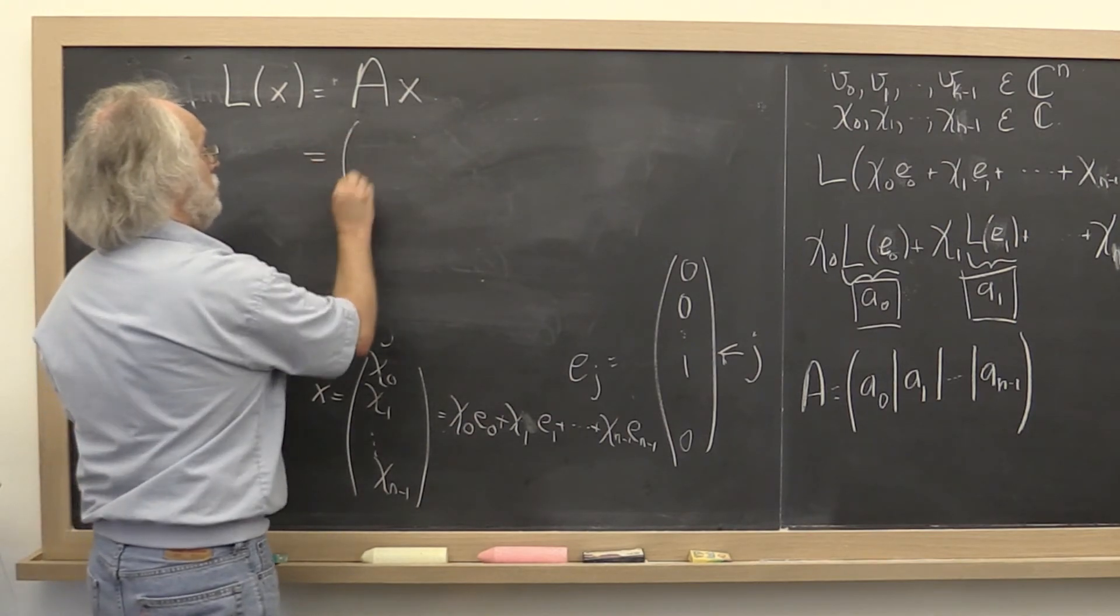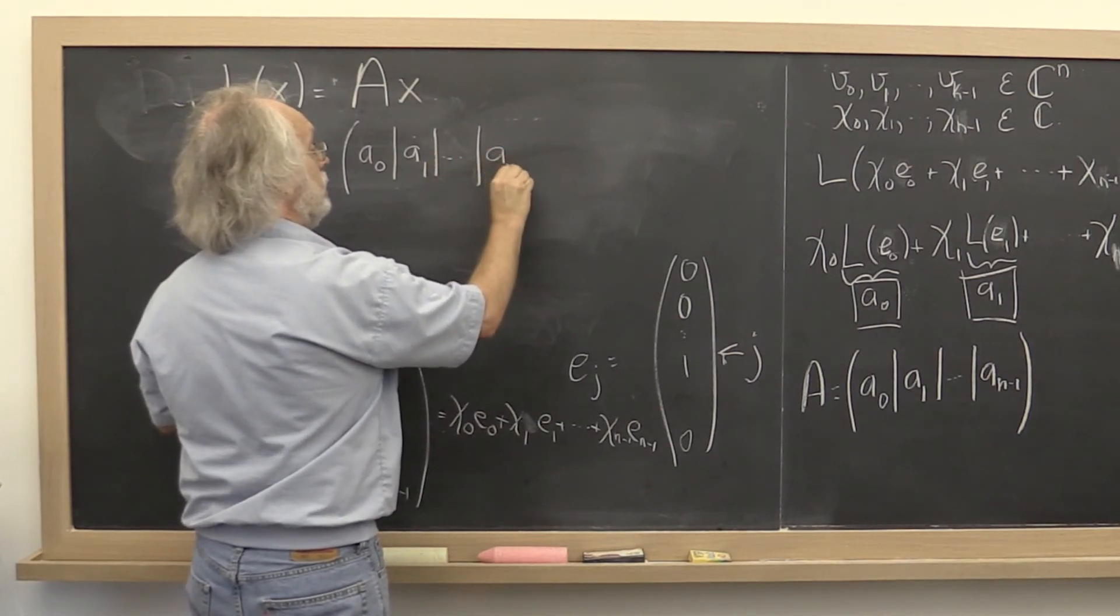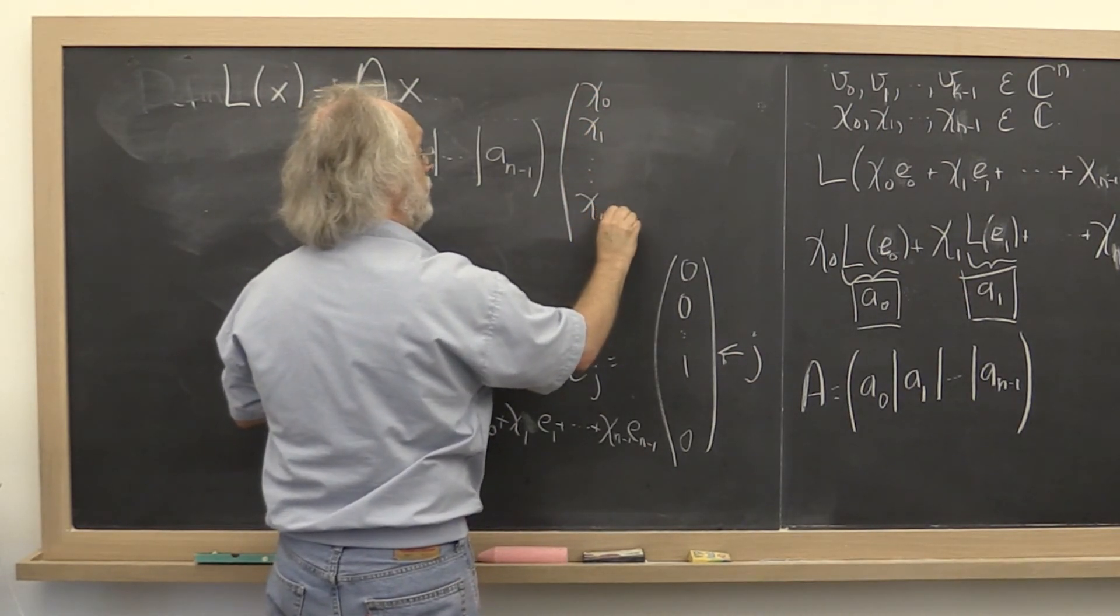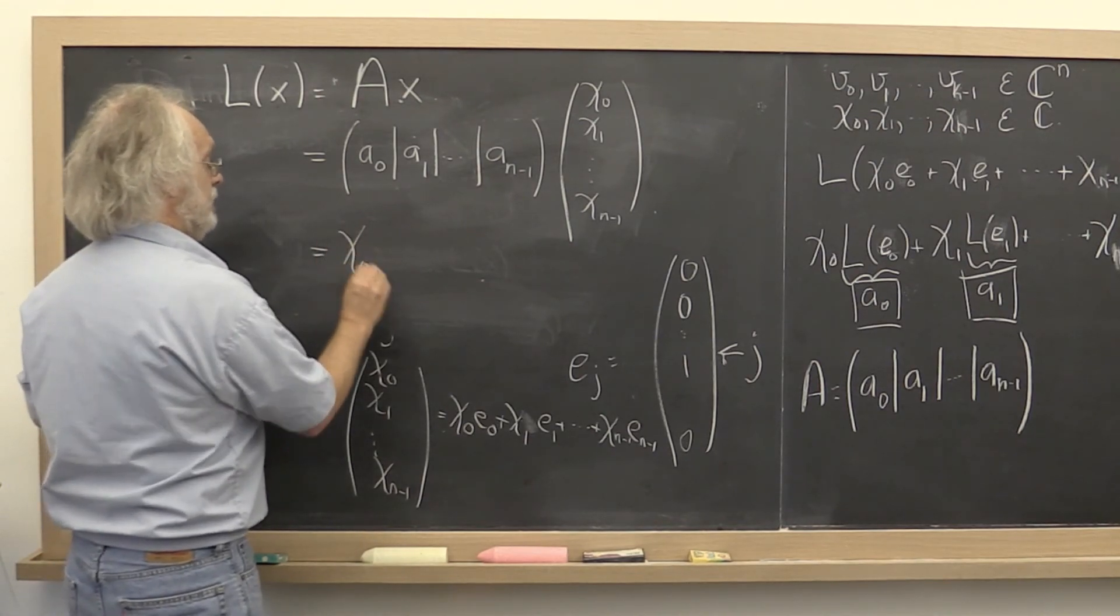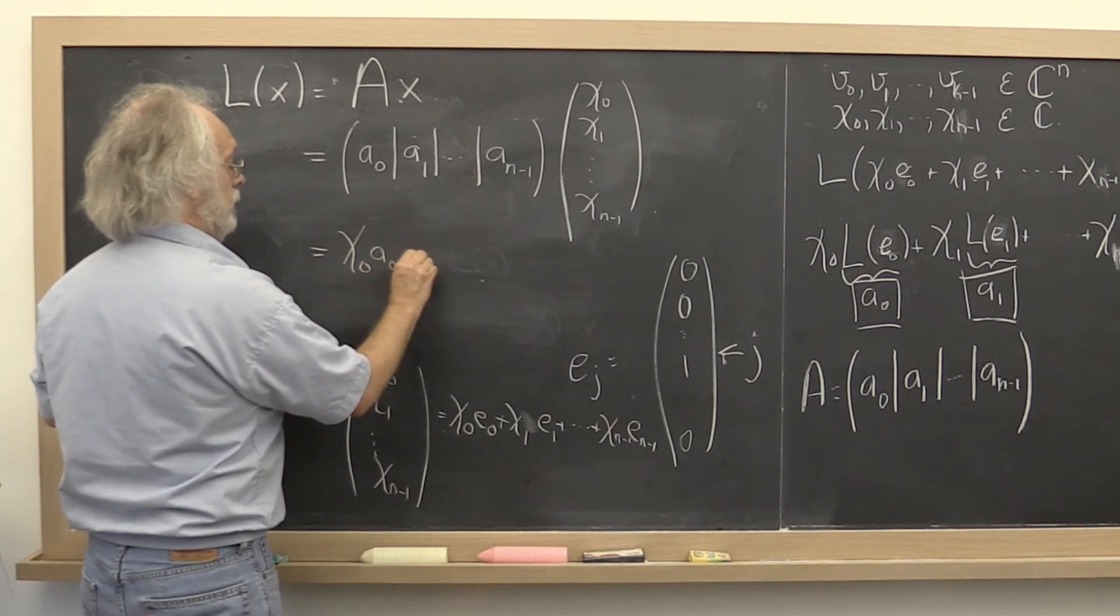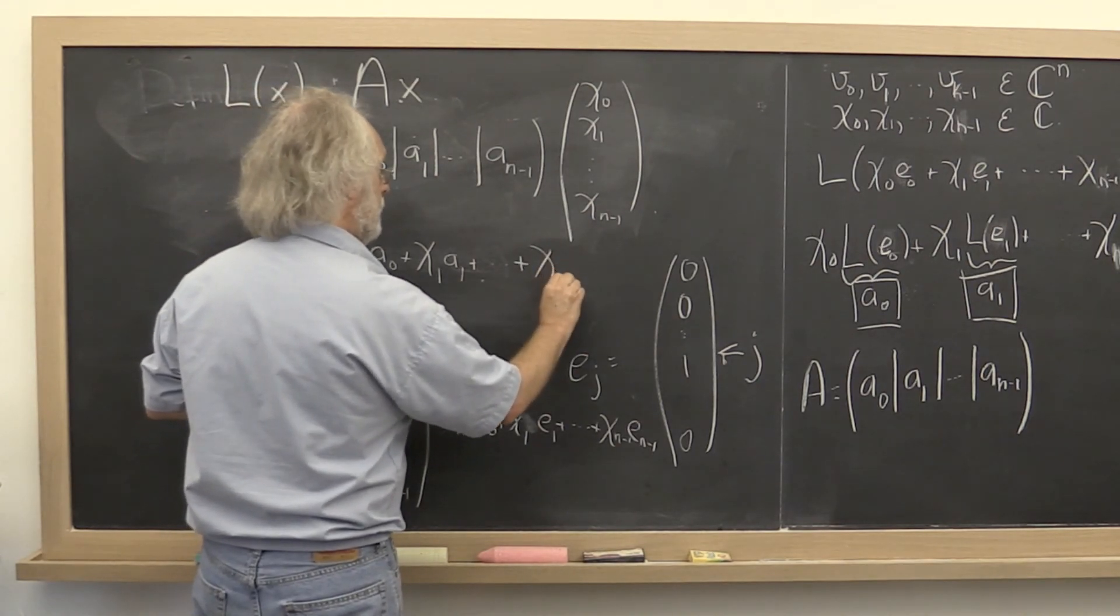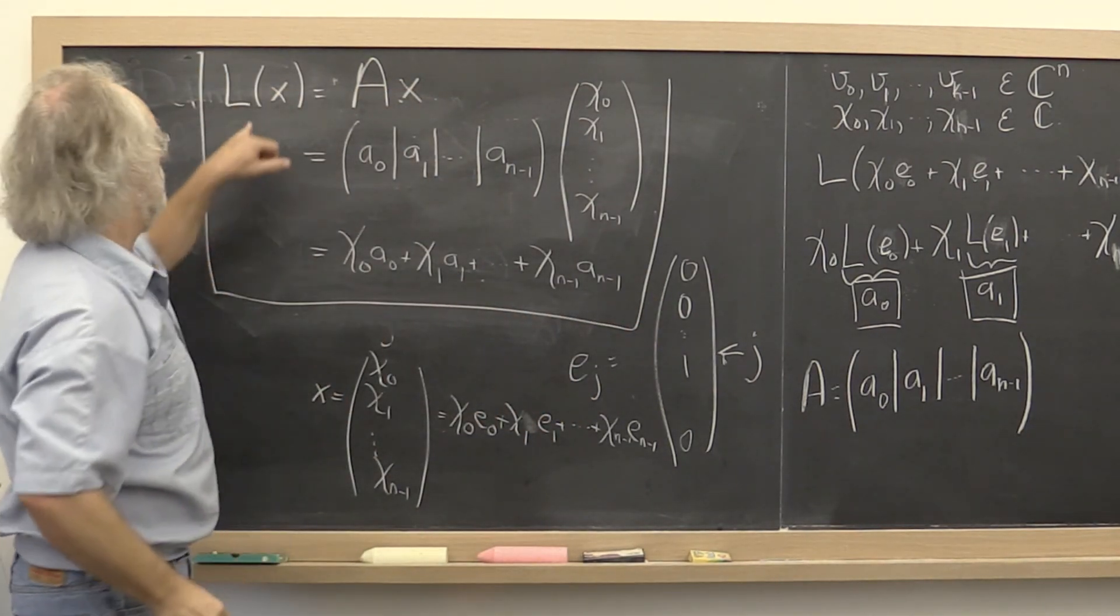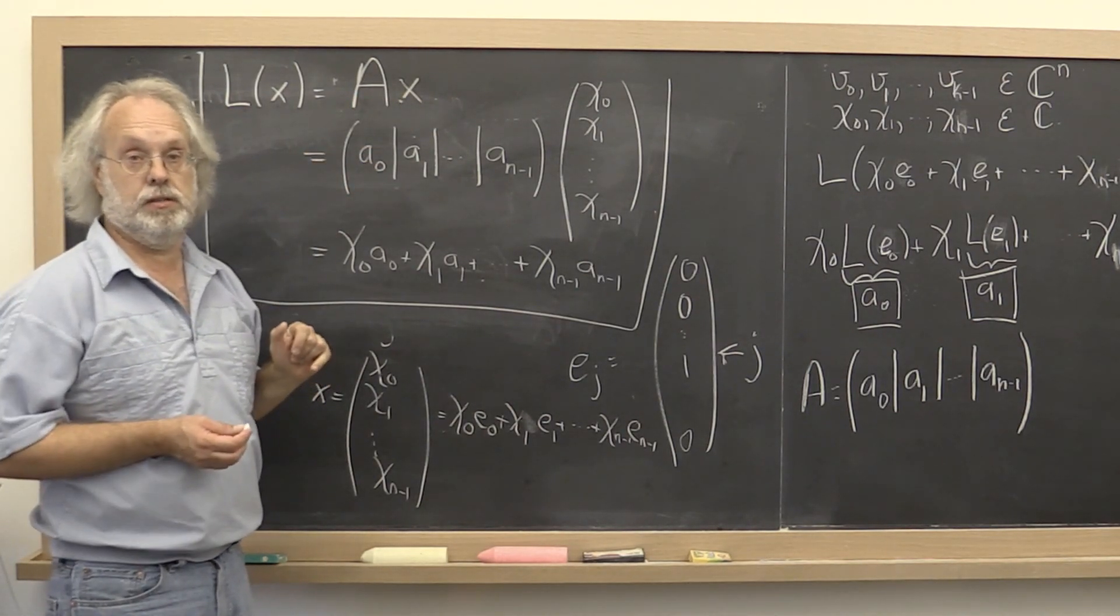If we now expose the columns of A, because after all it represents this two-dimensional array of numbers, and we expose the coefficients, the components of x, then we see that matrix vector multiplication should be defined as the linear combination of the columns of matrix A. And that's the link between a linear transformation and a matrix and matrix vector multiplication.